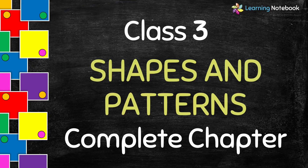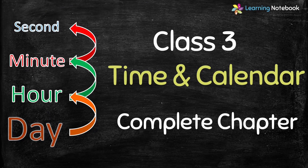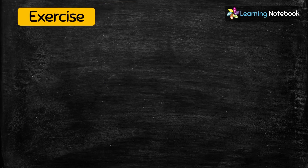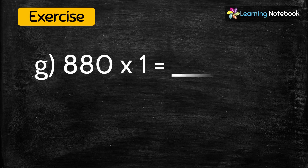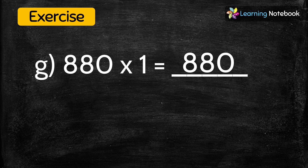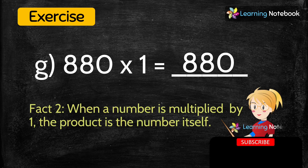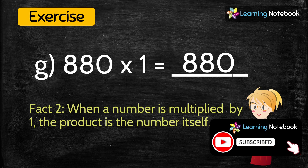We also have videos on the complete chapter of shapes and patterns, as well as time and calendar — I'm sure you will find these very useful, so do watch them. Now the next question: 880 multiplied by 1 equals? The answer is 880, because when a number is multiplied by 1 the product is the number itself.